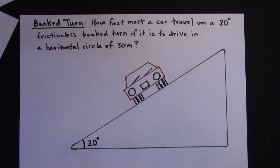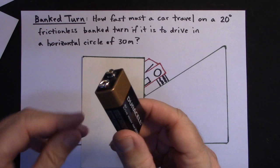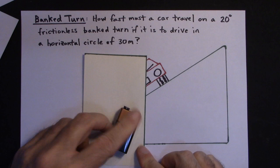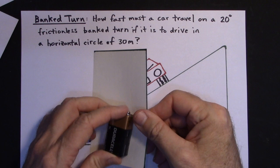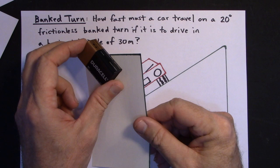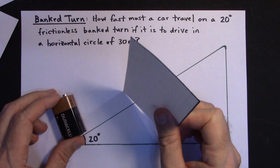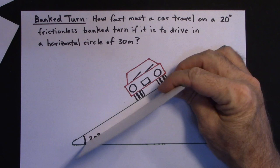Here's an example of what I mean. Imagine this is the road — flat right now. I'm going to use a Duracell battery because I don't have a car. These are the two headlights, and the car is moving around in a circle. But if we bank it a little bit, it's easier for it to go in that circle because the normal force is helping. It's much easier to solve the problem from a head-on perspective, like it's coming at us.